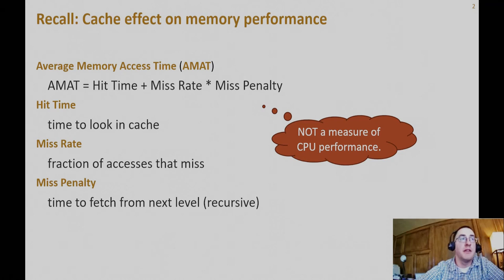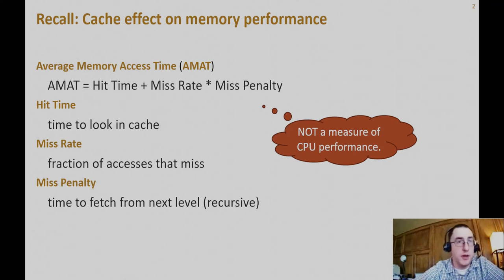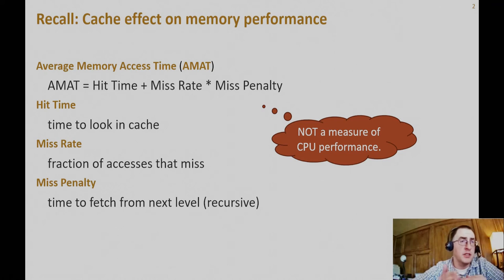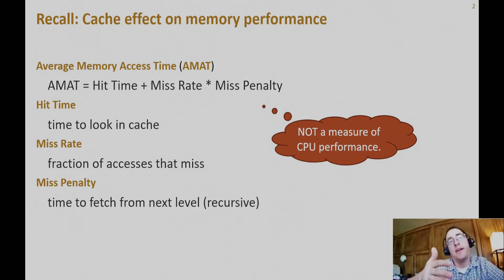We can formulate a recursive miss penalty: that's the hit time at the next level plus the miss rate at the next level multiplied by the miss penalty from the next level. The hit time, sometimes called the access time, is how long it takes to get to that level, check if you have a hit, and get that data back.